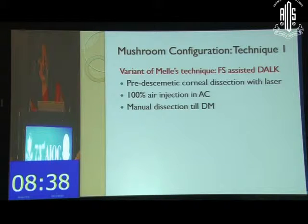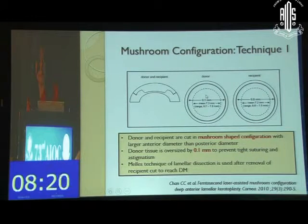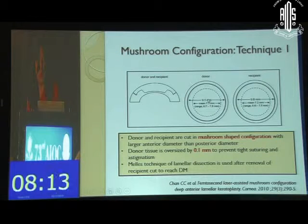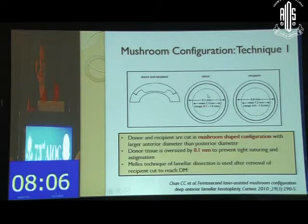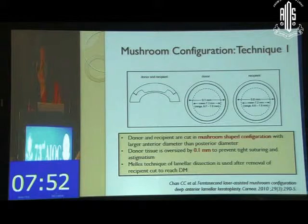In the variant of Mally's technique done by femtosecond laser, pre-Descemet's corneal dissection is done with the laser, followed by air injection inside the anterior chamber and manual dissection till the Descemet's membrane. The donor and recipient are cut in a mushroom-shaped configuration with a larger anterior diameter of 9.1 mm in the donor, a smaller posterior diameter of 7.3 mm, and a disparity between donor and recipient of 0.1 mm diameter.